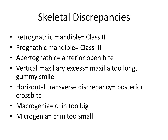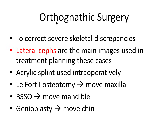Macrogenia means the chin is too big; microgenia means the chin is too small. Orthognathic surgery is used to correct severe skeletal discrepancies by manipulating the upper and/or lower jaws. Lateral cephalometric x-rays are the main imaging used in treatment planning, though cone beam CTs are becoming more routinely used since 3D imaging allows color map superimposition to predict and assess surgical outcomes. An acrylic splint is often used intraoperatively to guide the surgical result.